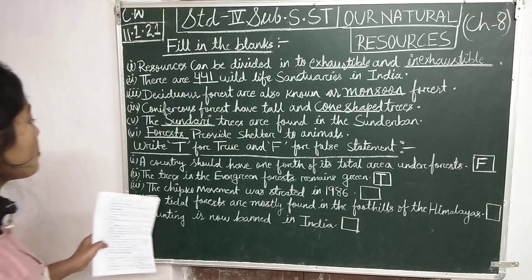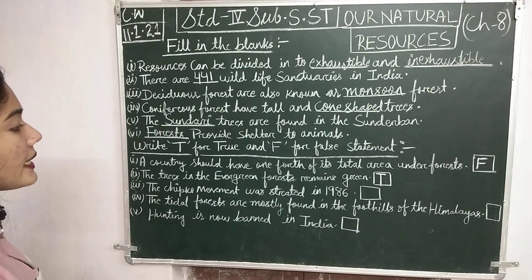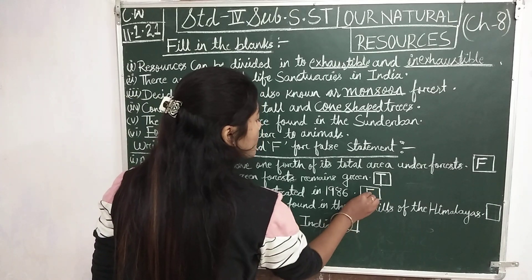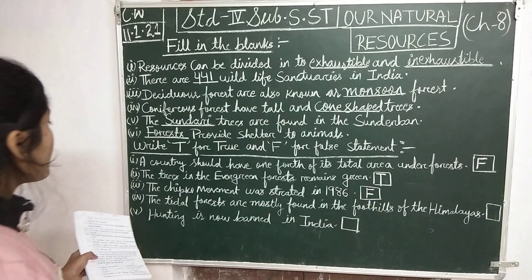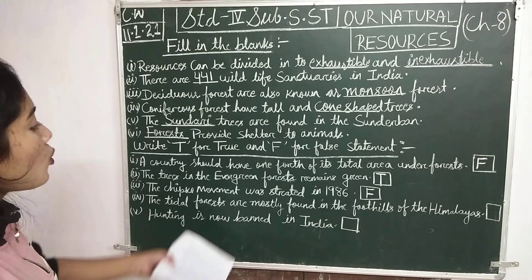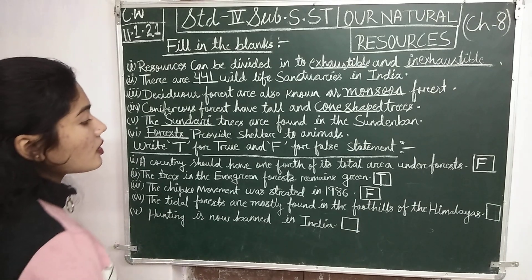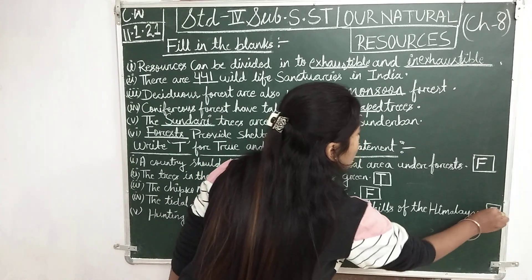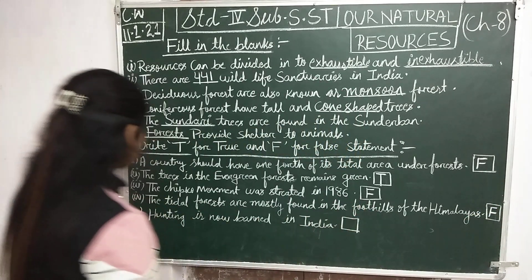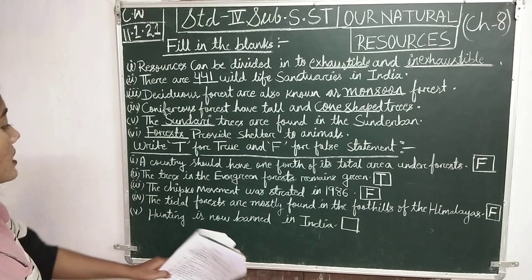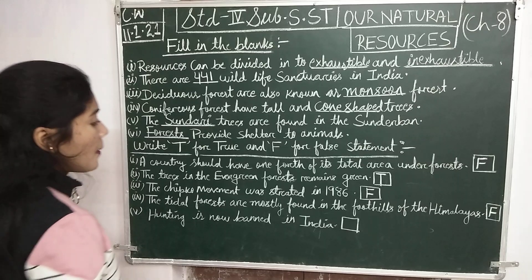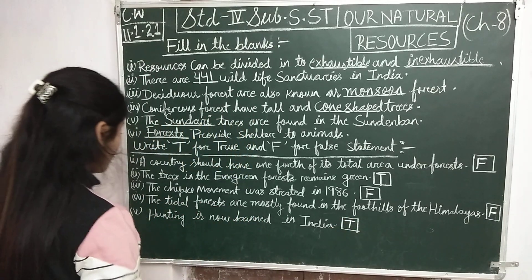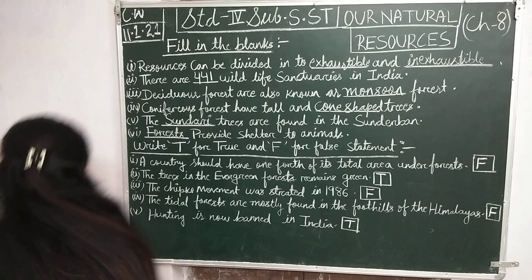Number 3: the Chipko movement was started in 1986 — it is false. Number 4: the tidal forests are mostly found in the foothills of the Himalayas — it is false. Number 5: hunting is now banned in India — it is true.